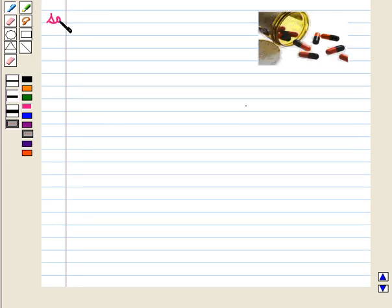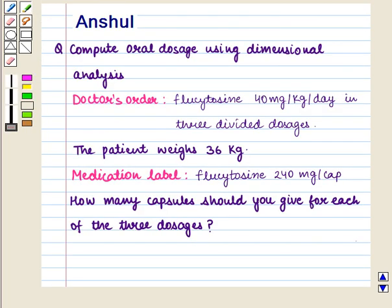Now let us start with the solution. In this question, the starting factor is 36 kg. There are two conversion factors. The first conversion factor is the number of mg ordered for each kg, or 40 mg per kg.